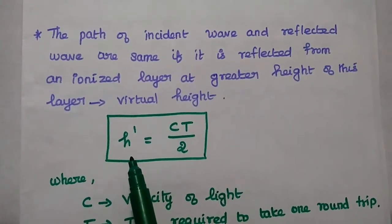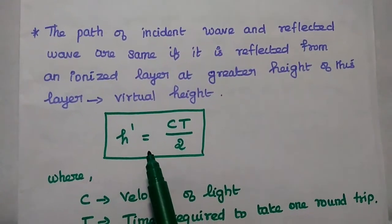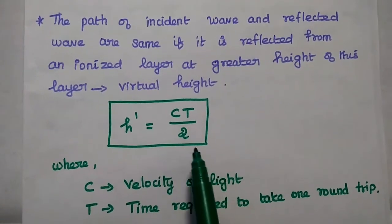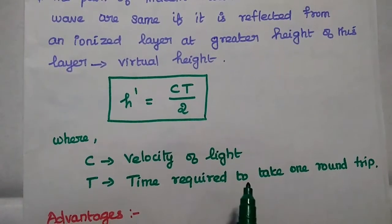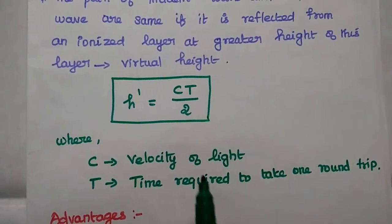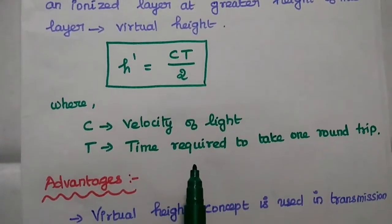It can be represented as H dash that is equal to CT divided by 2, where C is the velocity of light. T is the time required to take one round trip of that radio wave.